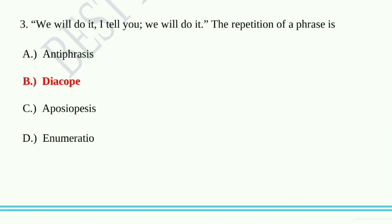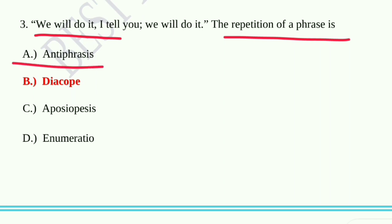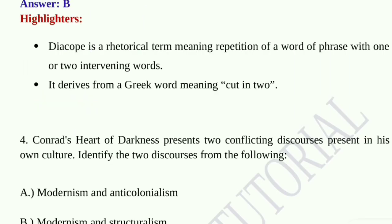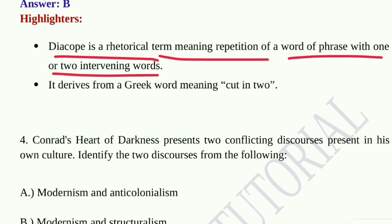Question number three: 'We will do it, I tell you, we will do it' — the repetition of a phrase is an example of option A, antiphrasis; option B, diacope; option C, aposiopesis; option D, enumeratio. Option B, diacope, is the correct answer. Diacope is a rhetorical term meaning repetition of a word or phrase with one or two intervening words. It derives from a Greek word meaning 'cut in two.'